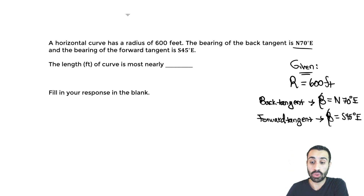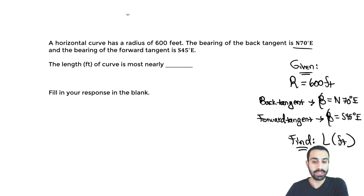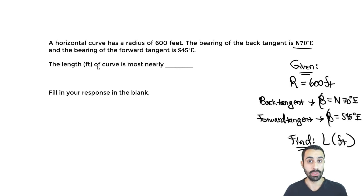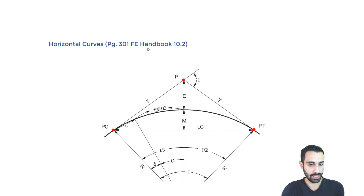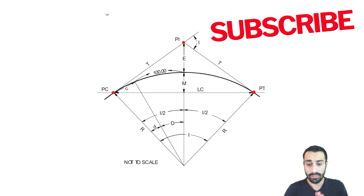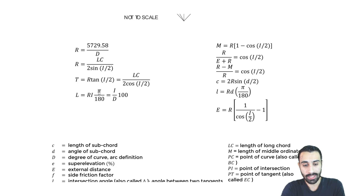Now the length of curve is most nearly what? So we want to find the length of curve — let's call it L in units of feet. Fill in your response in the blank. Fill-in-the-blank questions are common nowadays on the FE. We either round up or just put within the range they usually provide. In this case, we might round up at the end to get the length of curve. We have a horizontal curve, and in the handbook we have a diagram that shows the horizontal curve elements. The big points are the PC, the PI, and the PT, all defined in the handbook. We're not going to use all the equations — in fact, just one to solve this and find that length.